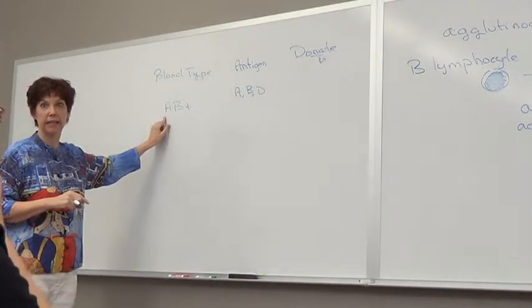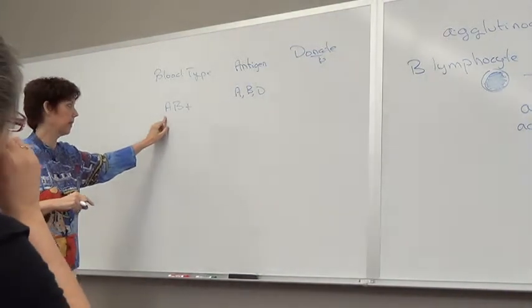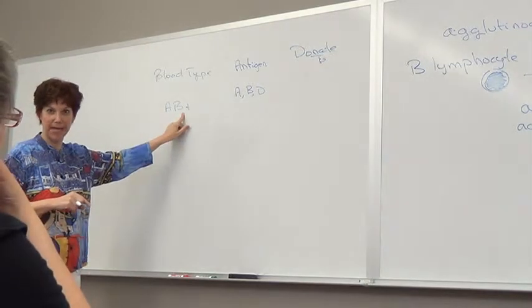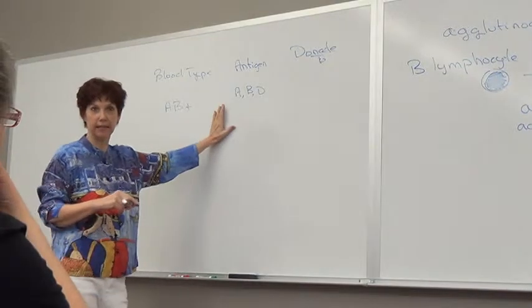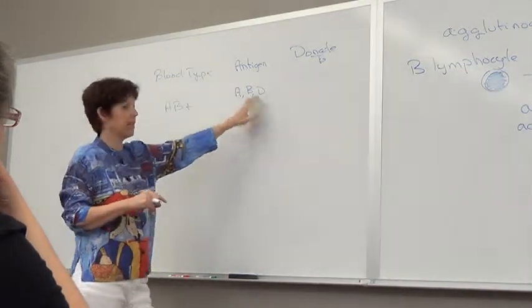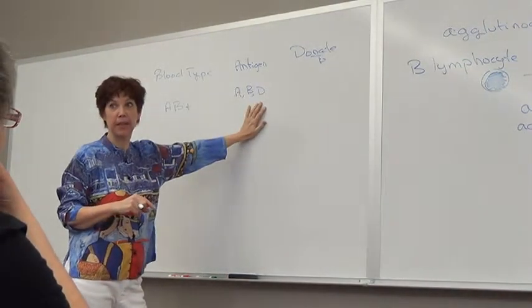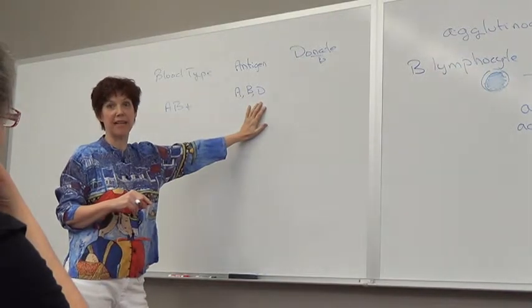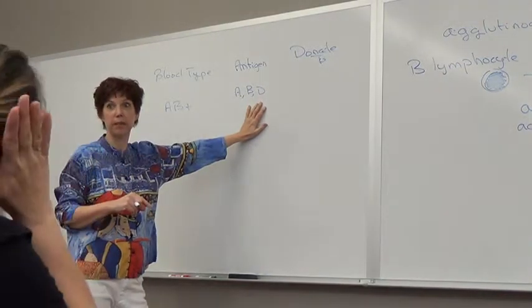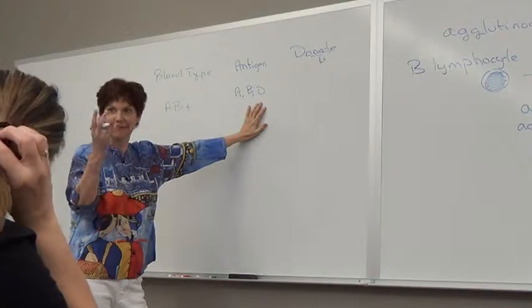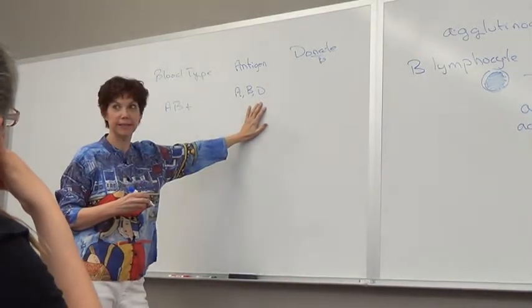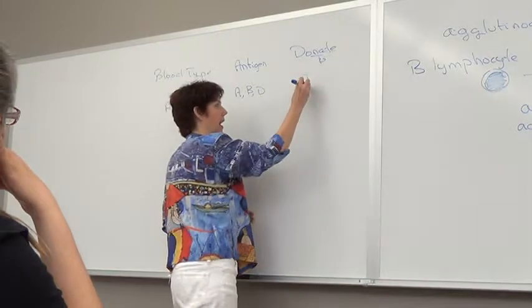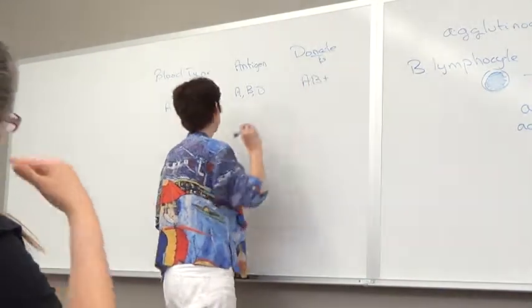And we can't give to negative because negative might have antibodies against D, and if they didn't we would cause them to be developed. So what's left? AB positive. But I wanted to go through the steps. That's more that I'm more concerned that you understand the steps, because you're going to use the same steps no matter what the choice.